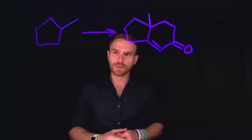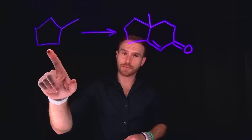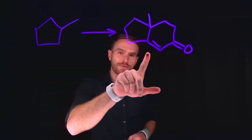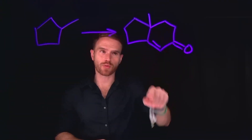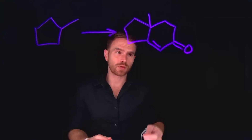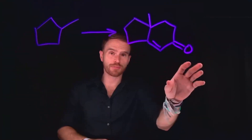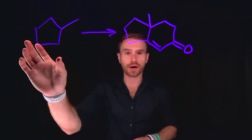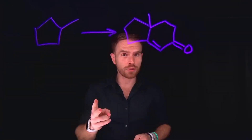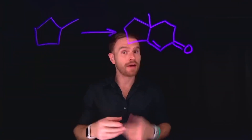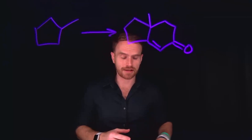For the first question, you've been tasked with turning this five-membered ring into a fused ring system that also contains this six-membered ring. In addition, we see that we have several different functional groups that are present on the product that are not present on the reactant. Therefore, I know that I will use both of our tips for devising a retrosynthetic analysis plan.